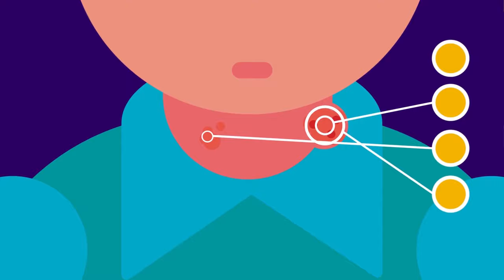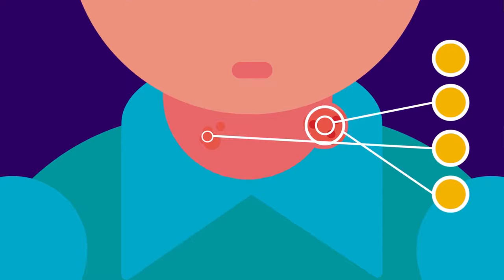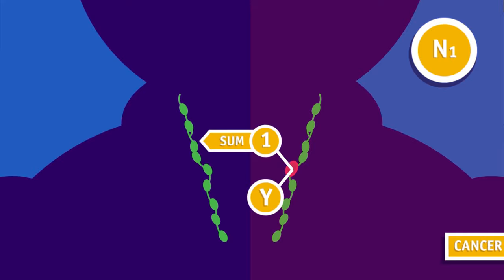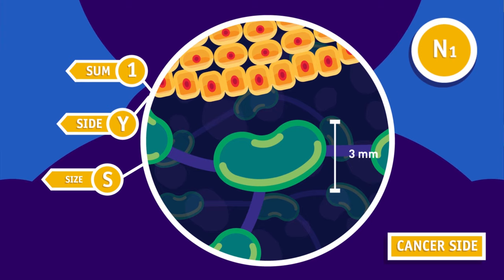There are 4 main N stages of mouth cancer, N0 to N3. N0 means the lymph nodes don't contain cancer cells. N1 means that one lymph node contains cancer cells on the same side of the neck as the cancer. The node is no larger than 3 cm across. The cancer has not spread into tissue surrounding the lymph node.